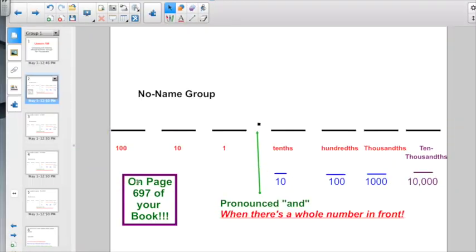Just a quick review if you are still fuzzy about place value. This shows up on page 697 of your book. Everything to the left of the decimal point are the whole numbers. The first group we call the no-name group: the hundreds, tens, and ones, because you just say the name of the number. You don't have to say a name of a group. You have the decimal point you pronounce, and when there's a whole number in front, if you just have a zero, you don't say zero and the decimal number. You just pronounce the decimal number.